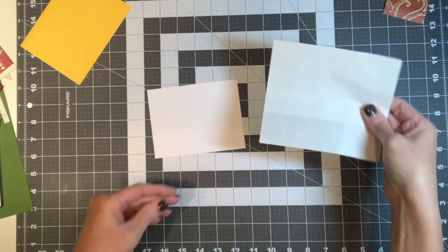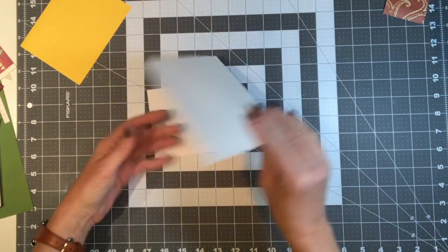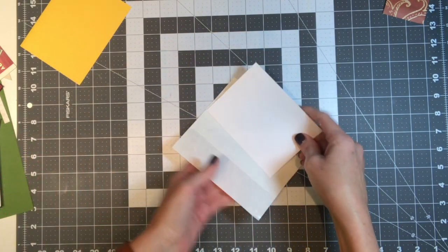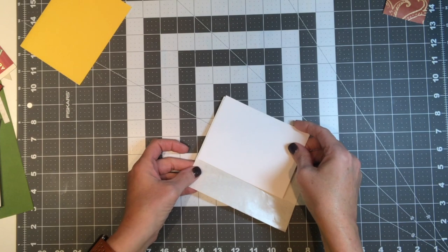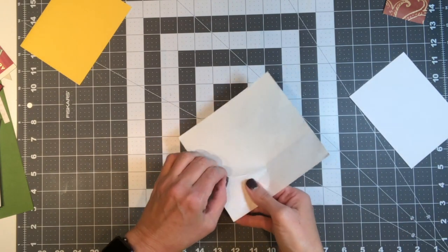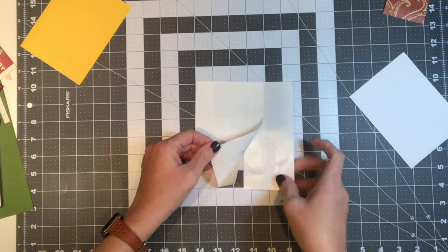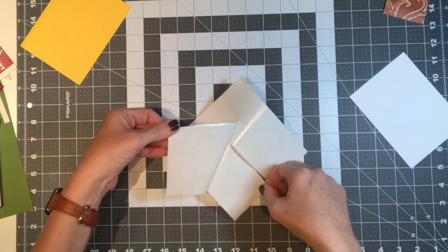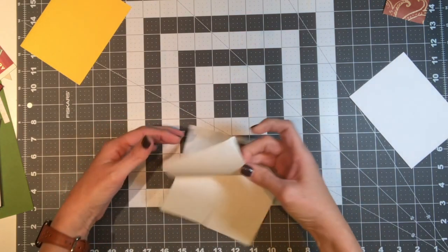And if you haven't used stick it adhesive before, you basically are sticking this to your paper and then when you peel off the backing it leaves a stickiness on your paper that you can use. It's very good for use with intricate dies and that kind of thing.